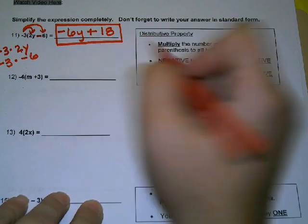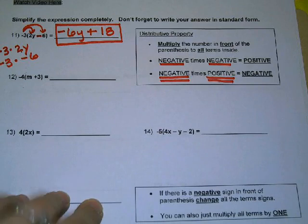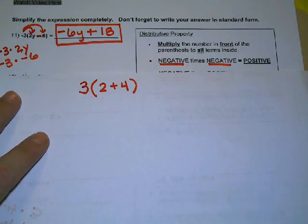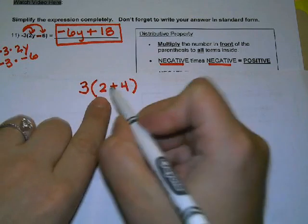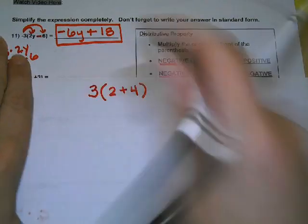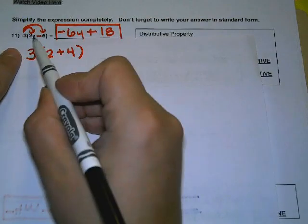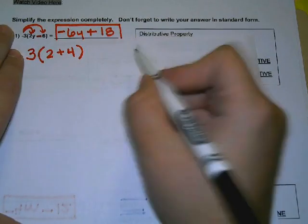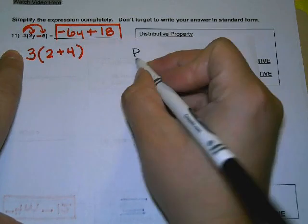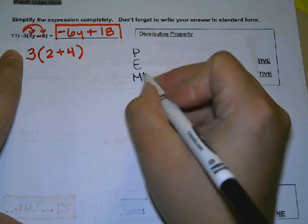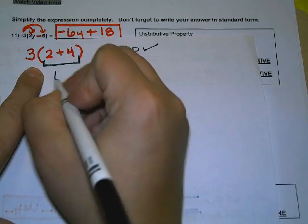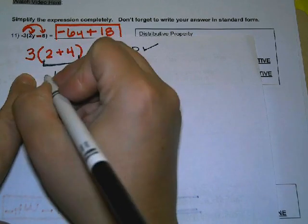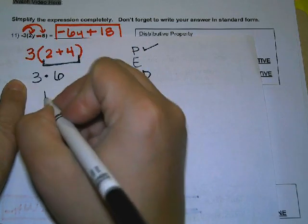So when would we use the distributive property? If we had a problem like this, we wouldn't have to, but we could. If you look at the difference between these two problems, here there's a variable. In order of operations, parentheses comes first. So we would do here the 2 plus the 4, which is 6, and then a 3 next to a parenthesis means multiply, and we would get 18.